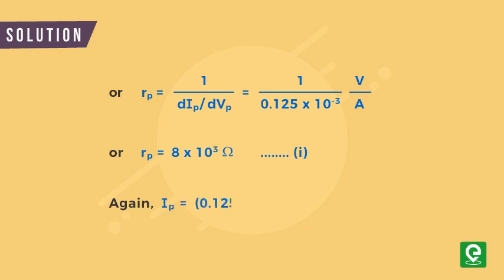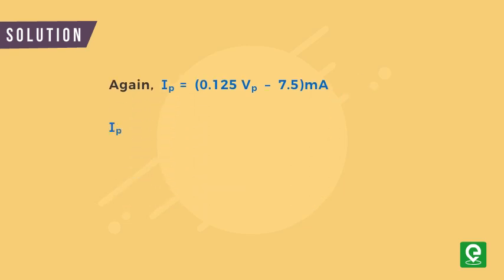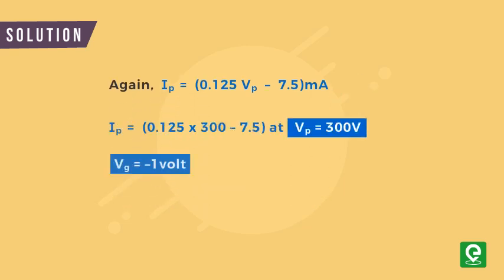This gives us r_p = 8 kilo-ohms. Again, I_p = 0.125V_p - 7.5 milliamperes. At plate voltage of 300 volts, I_p = 30 milliamperes.